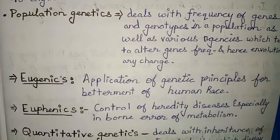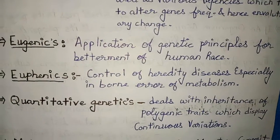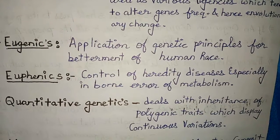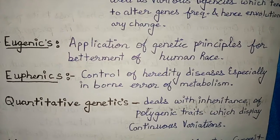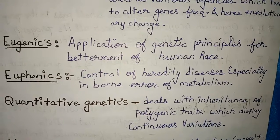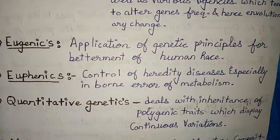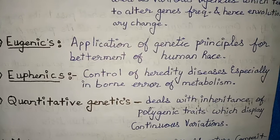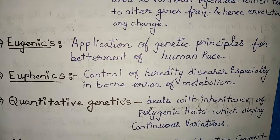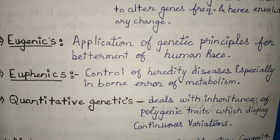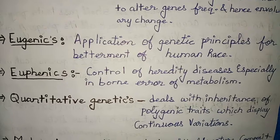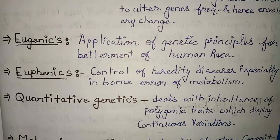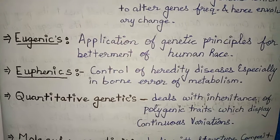In quantitative genetics — what is quantitative genetics? It deals with the inheritance of polygenic traits which display continuous variation. There are many traits in these polygenic traits; traits means characters. It always involves continuous variation; there will be variation throughout time in quantitative genetics.